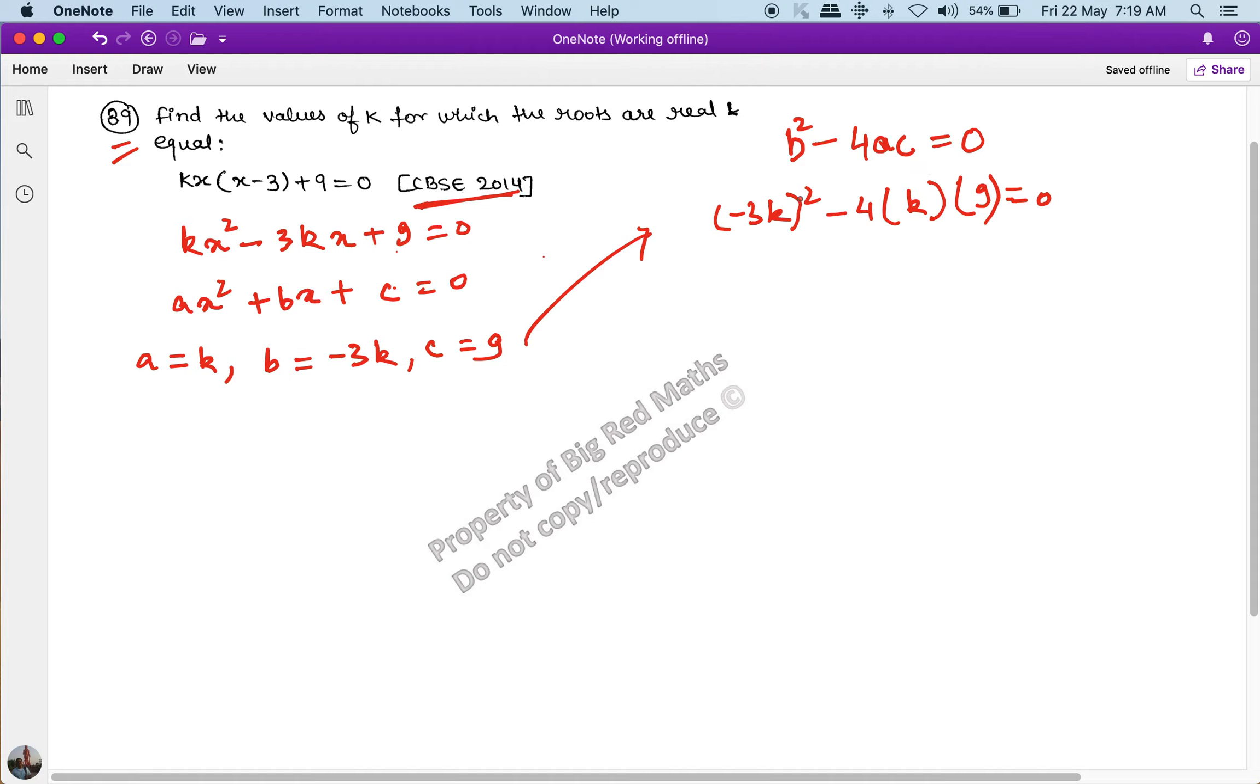So this will happen: minus of 3k whole square minus of 4 into k into 9 should be equal to 0. This gives us 9k² minus 36k equal to 0. If I take 9k common, this becomes k minus 4 equal to 0.